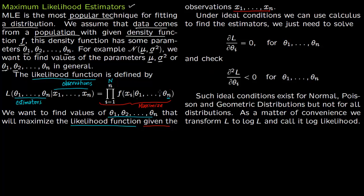Under ideal conditions you do not have to use a computer; you can use calculus to solve this problem. In calculus you apply the first-order condition: you take the derivative of L with respect to theta_i — first with respect to theta_1, then theta_2, then theta_3. You set each derivative equal to zero, giving you n equations corresponding to each theta. You solve these equations to get theta_1 to theta_n. For example, in the normal distribution, the MLE for the mean mu is just the average of the sample.